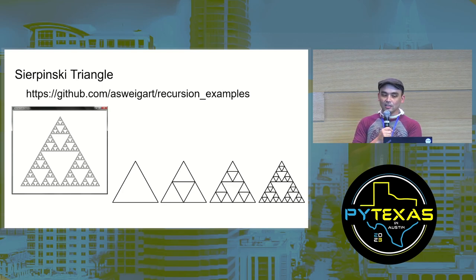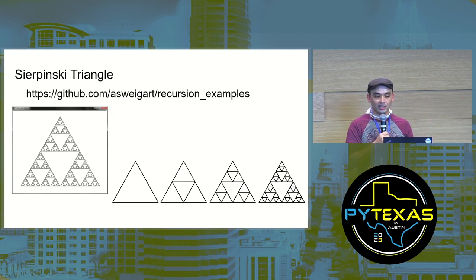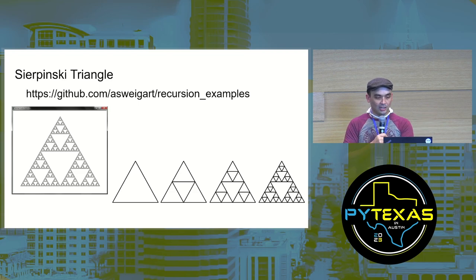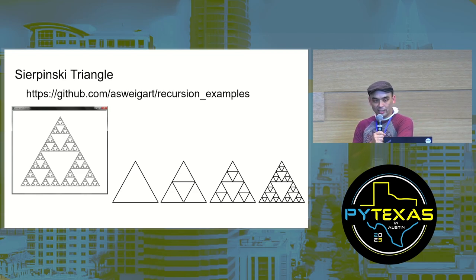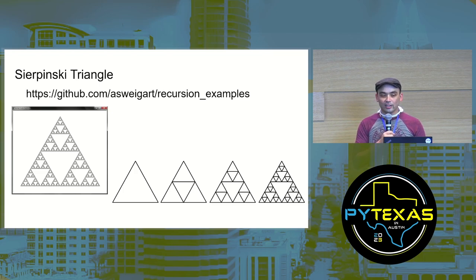For example, here's a fractal, which is a recursive shape. This is called a Sierpinski triangle — it kind of looks like the Triforce from Legend of Zelda. I drew this one using the turtle module that comes with Python. It's a triangle with an upside-down triangle in the middle, which forms three new triangles, and then you draw upside-down triangles inside those, and so on forever. A Sierpinski triangle is made of three Sierpinski triangles — its definition includes itself.